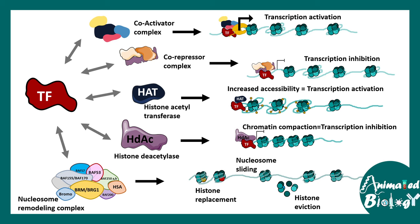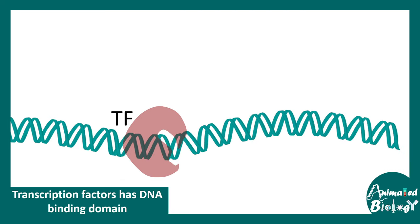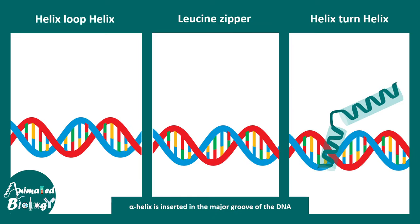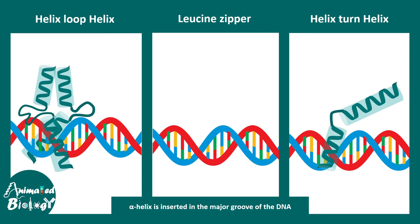This is how transcription factors, along with their partners, can have an effect on transcription. Transcription factors have a peculiar feature: they mostly have a DNA binding domain that interacts with the major groove of the DNA. There are a few exceptions, but many transcription factors interact with the bases in the major groove — for example, the helix-loop-helix family, where the helices are inserted into the major groove.